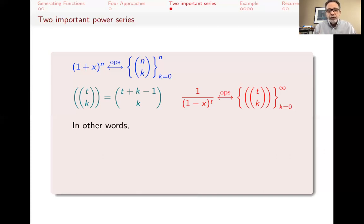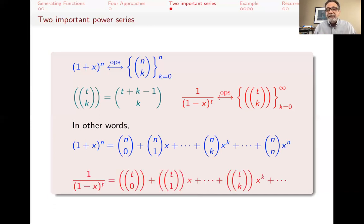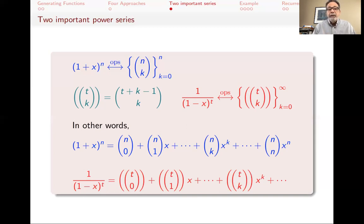To restate: (1+x)^n expanded gives binomial coefficients, and the Taylor series for 1/(1-x)^t at x equals zero gives multi-choose numbers as coefficients. In combinatorics, these two are usually the go-to power series to start the process, though there are others depending on the function you're dealing with.